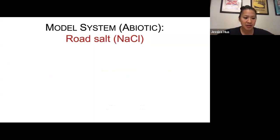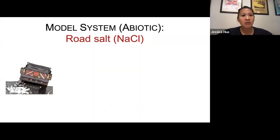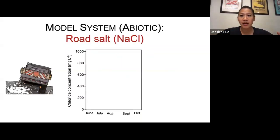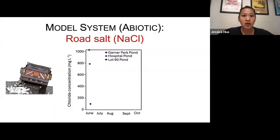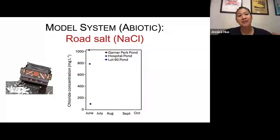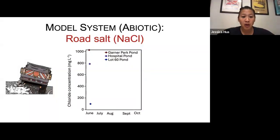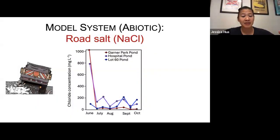When it comes to understanding how stressors influence amphibians' role in nutrient cycling, we'll focus on road salts — a very common pollutant in pond ecosystems. Road salts vary across space: the dots you see represent ponds, and chloride concentrations range anywhere from below 200 milligrams per liter to above 1,000 milligrams per liter. Road salt contamination, even just within three ponds in the Madison area, varies across space and also across time, with substantial variation in chloride concentration month to month.